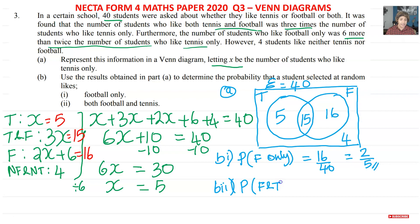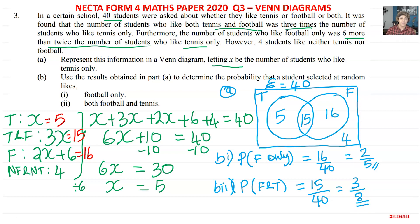For (b)(ii), we need to find the probability that a student likes both football and tennis. That's the intersection area, which has 15 students out of 40 total. Dividing both by 5: 15 ÷ 5 = 3 and 40 ÷ 5 = 8, so the answer is 3/8. Hope you enjoyed this session — have a good day and bye for now!